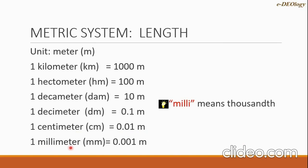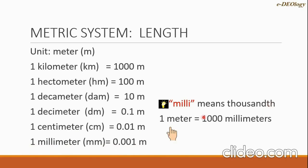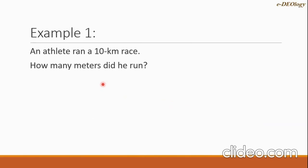The last unit is millimeter, with symbol mm. One millimeter equals one thousandth of a meter — the word 'milli' means thousandth. We may also write this as: one meter equals one thousand millimeters. Now let's see some conversion problems.